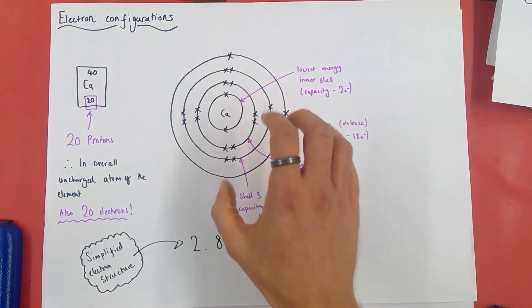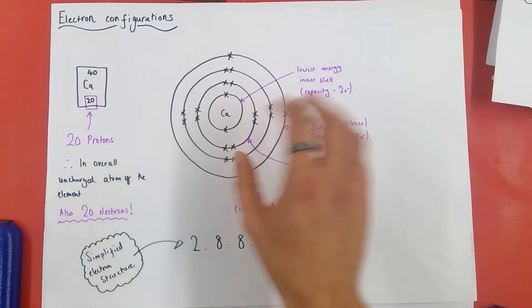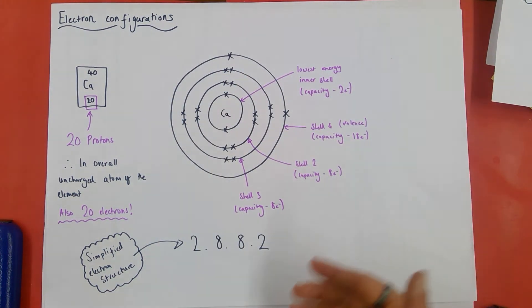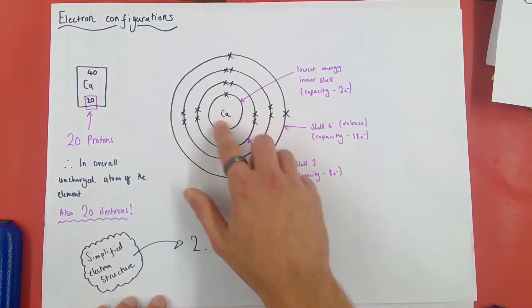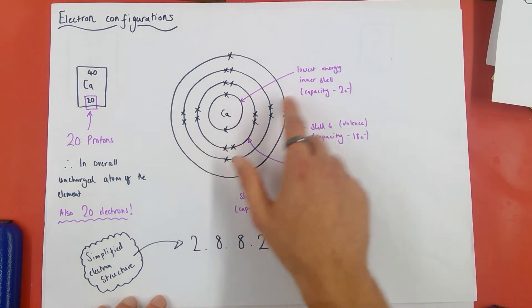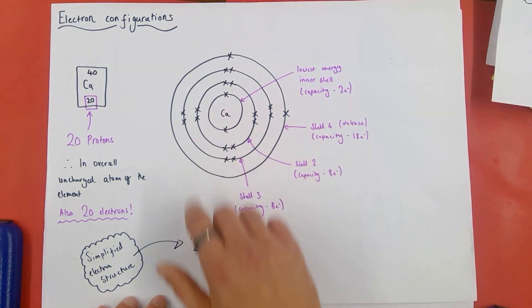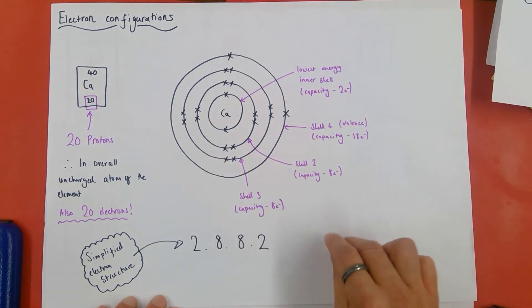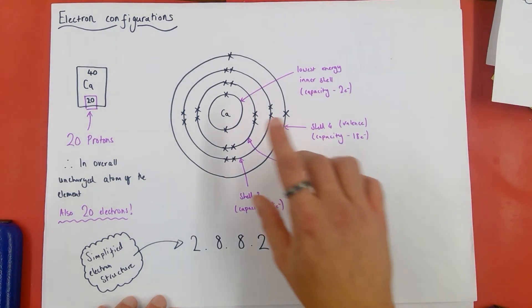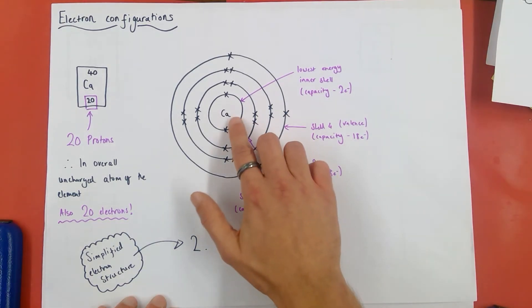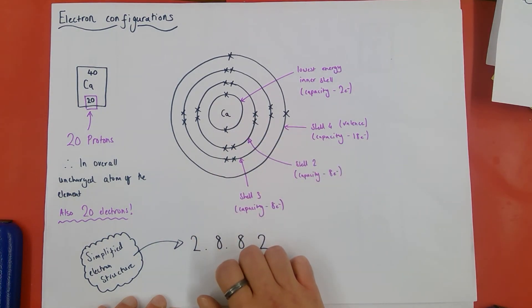Then we have this electron configuration diagram, and there's a particular pattern we follow for these. The pattern's always the same, and so I'm going to teach that pattern to you now. The first inner shell, or energy level, is always the lowest energy level around the nucleus of an atom, and it has a maximum capacity of two electrons. Once two electrons occupy that shell, no more electrons can be added to that particular energy level. We have to move up to the next energy level to put more electrons around this nucleus.